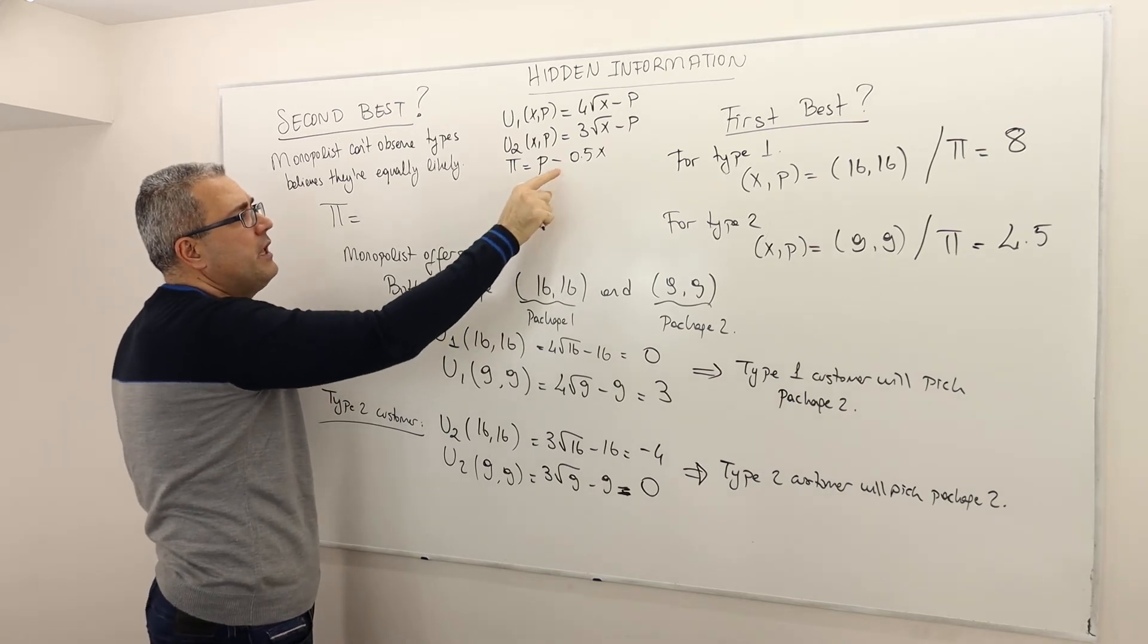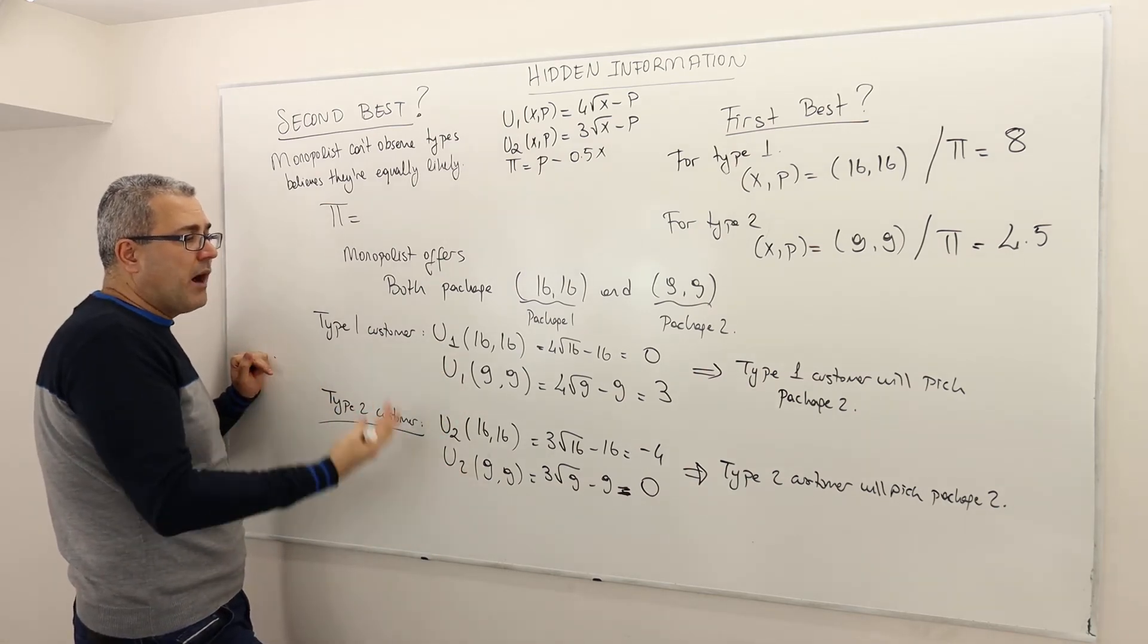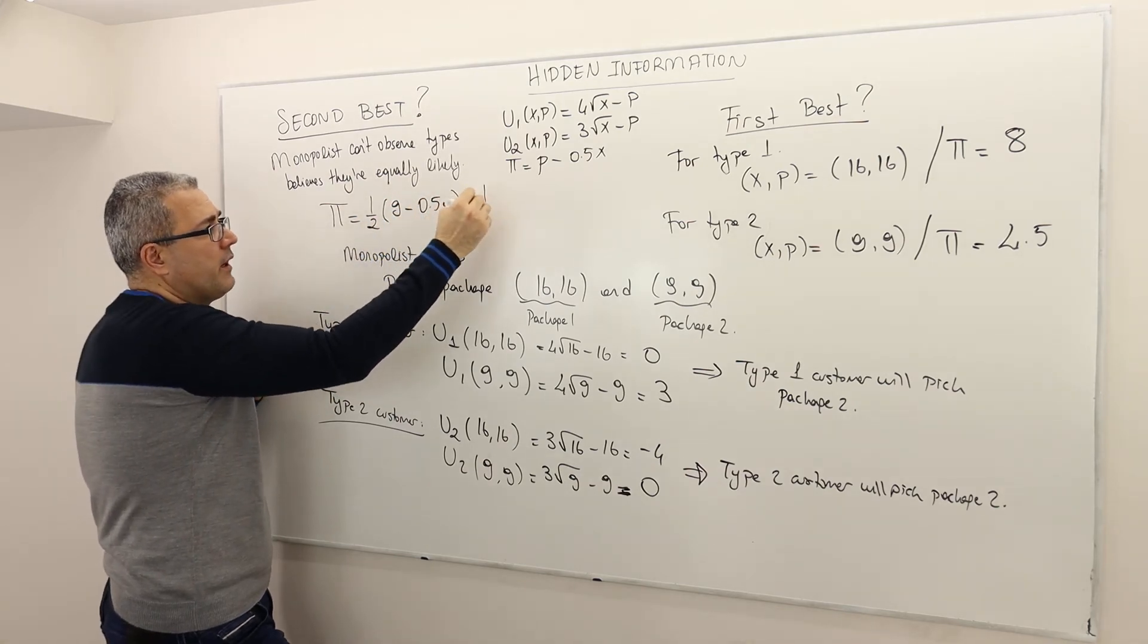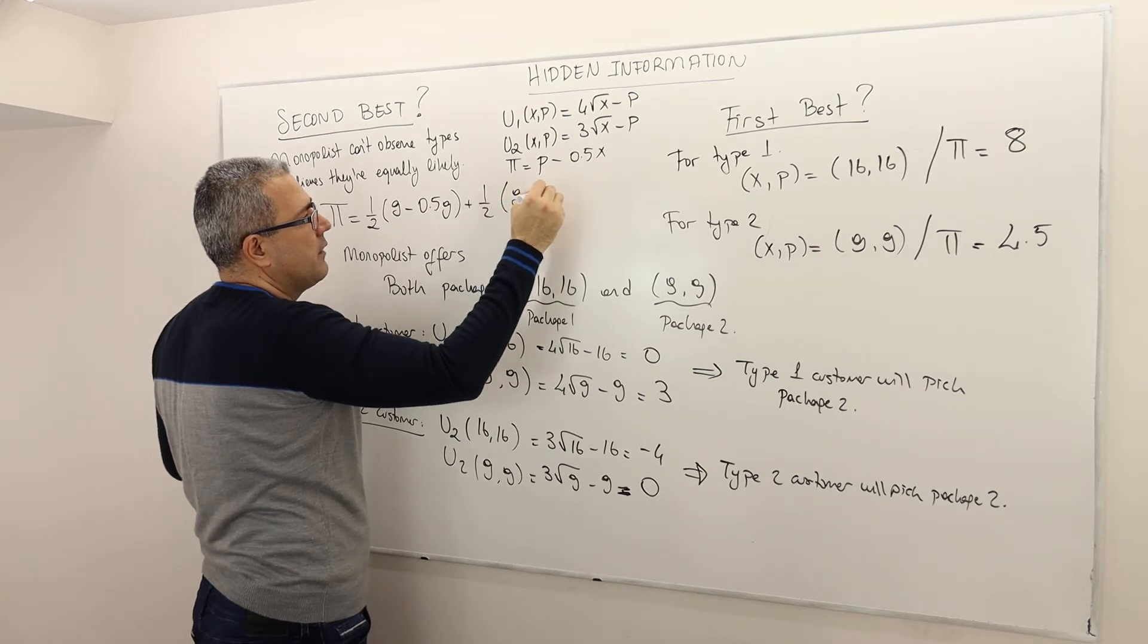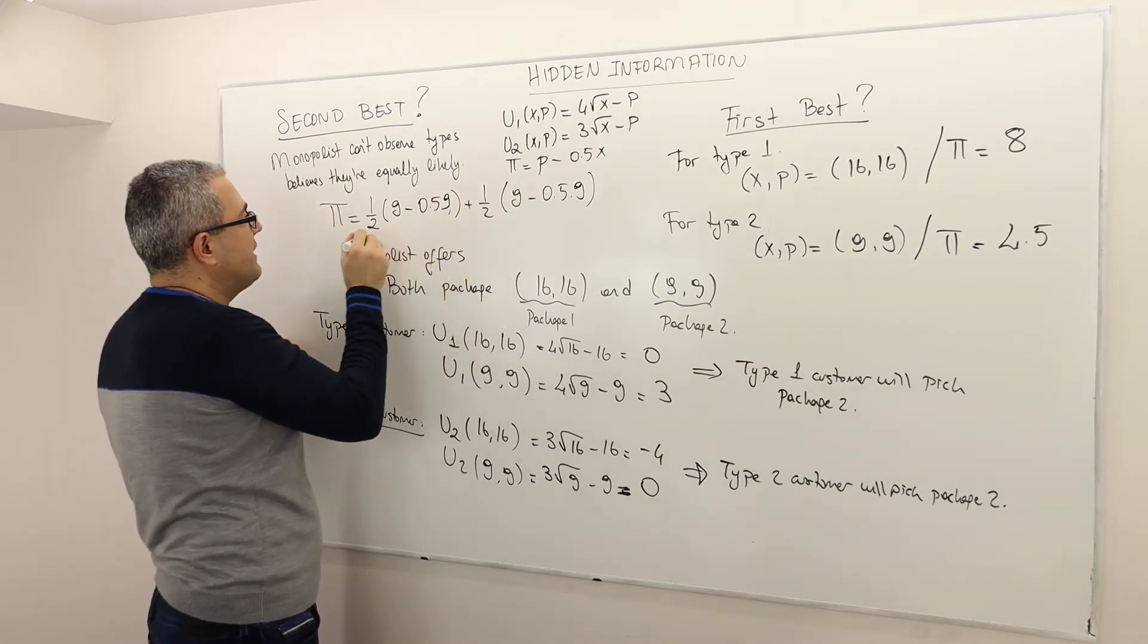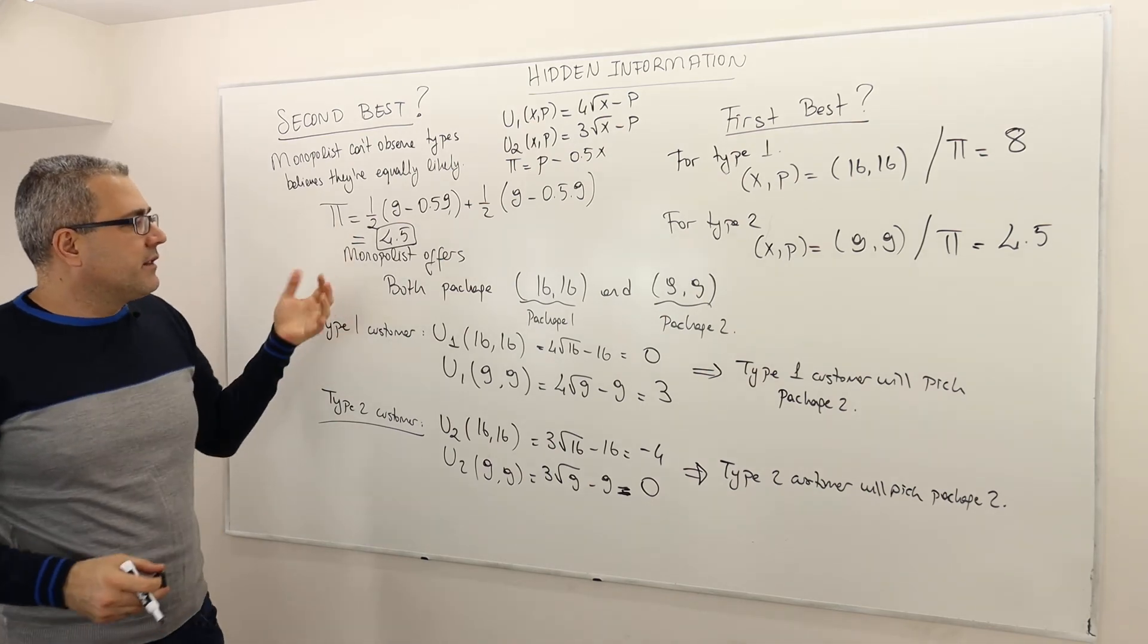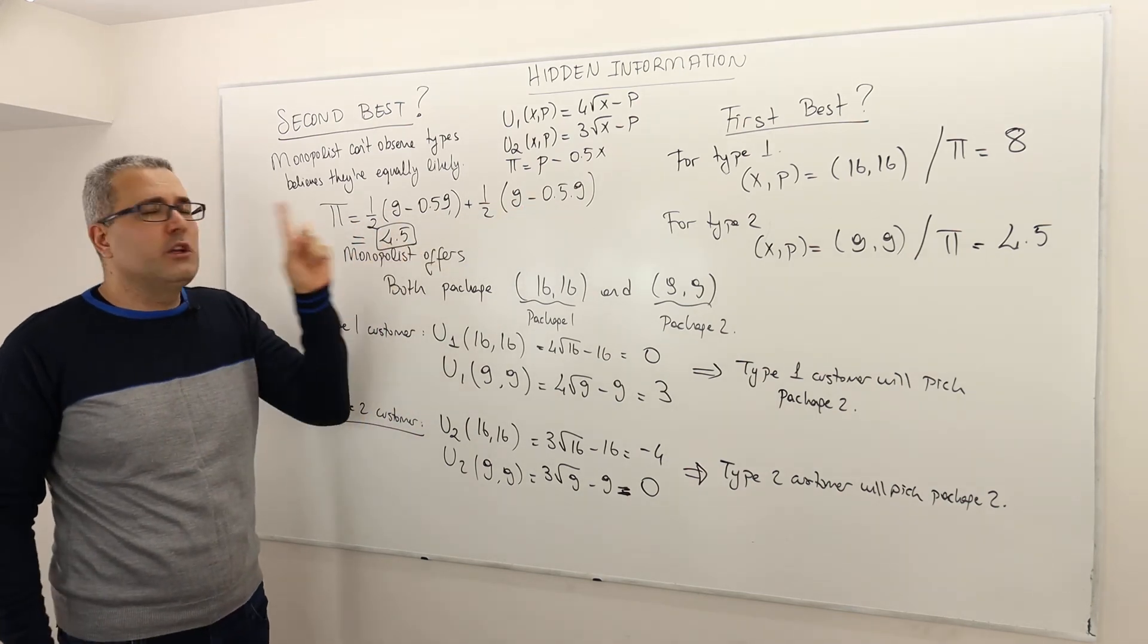So the profit is going to be - remember the profit function of the monopolist is P - 0.5X. And remember that both type one and type two customers actually buy the first package. So therefore the monopolist profit is going to be 1/2 times (9 - 0.5*9) plus 1/2 - I'm calculating expected profit. If it is high type and if it is low type, it's going to be 9 - 0.5*9. So therefore that's equal to 4.5.